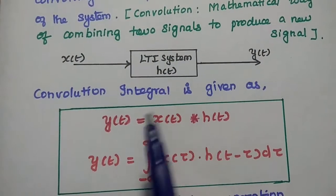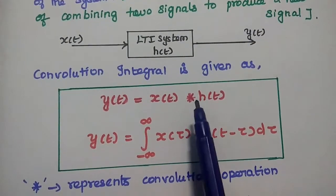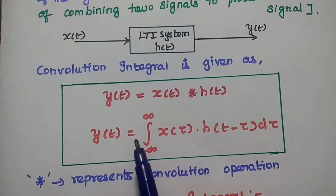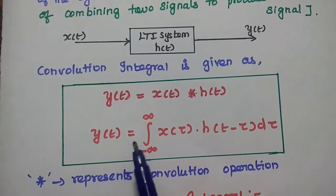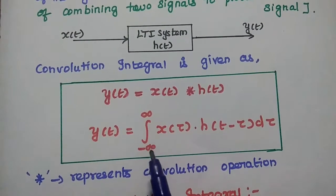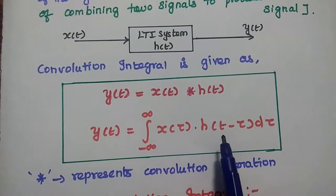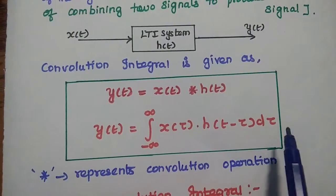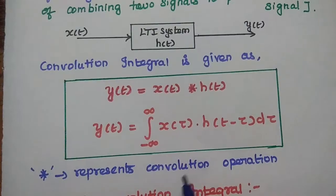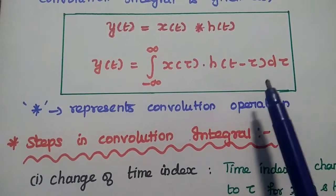It is defined as Y of t is equal to X of t convolved with H of t, where the symbol represents the convolution operation. The mathematical expression for this convolution integral is Y of t equal to the integration from minus infinity to plus infinity of X of τ times H of t minus τ dτ. Here τ represents the time variant of the convolving signal. This is the formula of convolution integral.